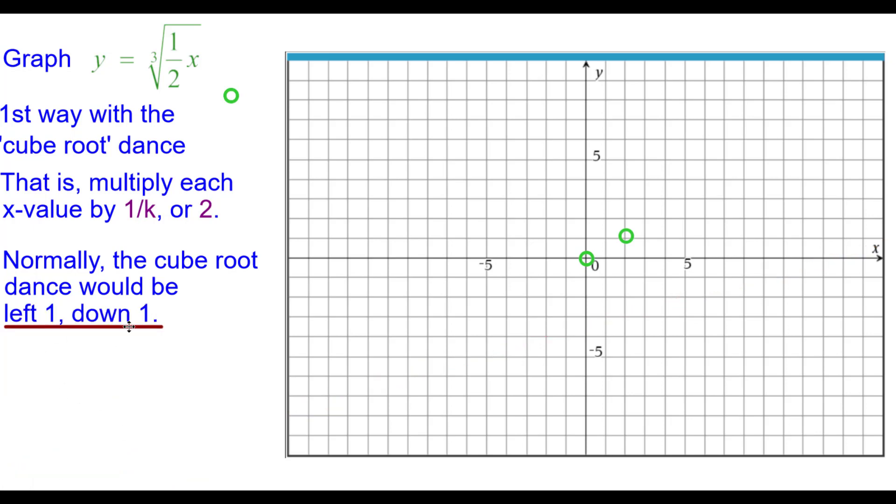So left one down one is the normal cube root dance. We are going to go left two down one. Two times one is two. Plot negative two comma negative one.